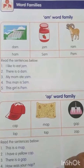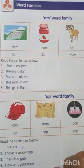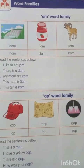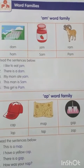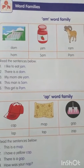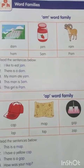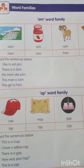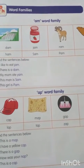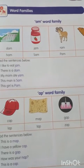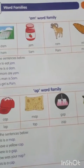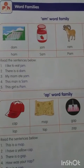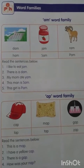The AM word family sentences: I like to eat jam. There is a dam. My mom ate yam. This man is Sam. This girl is Pam. Jam is part of the AM word family. You all like to eat jam — bread and jam, or chapati with jam. Dam is also part of the AM family.